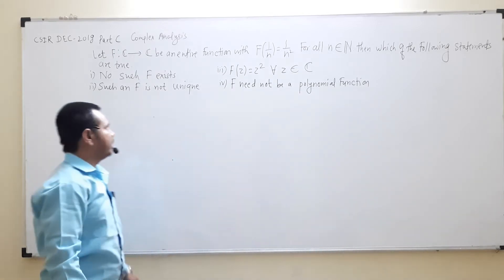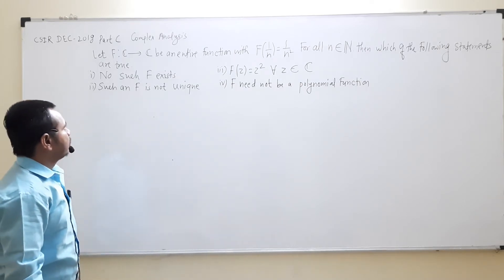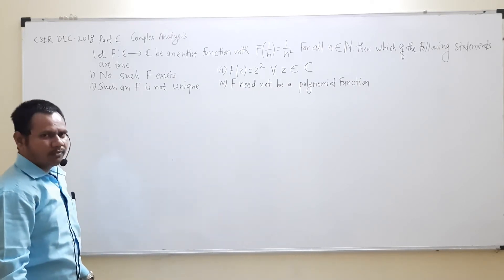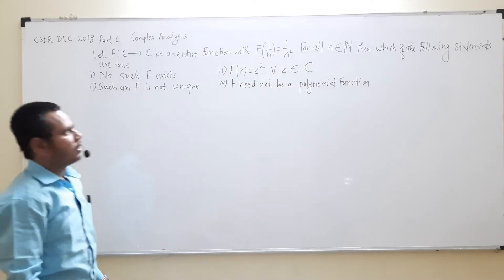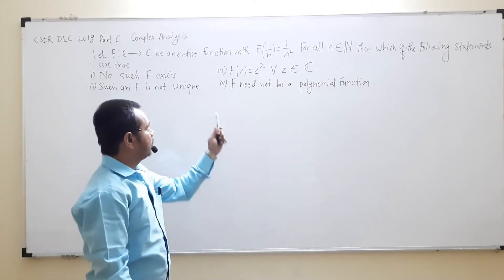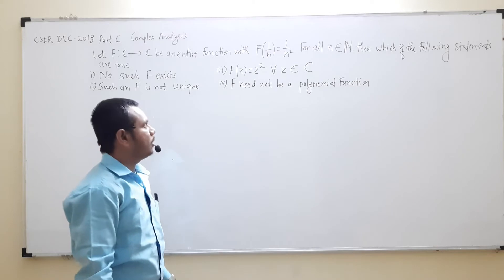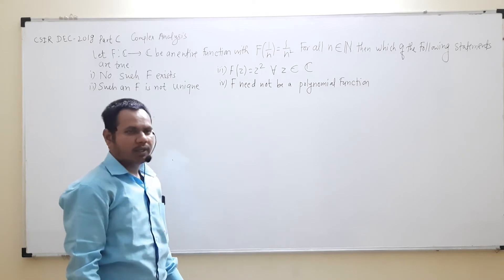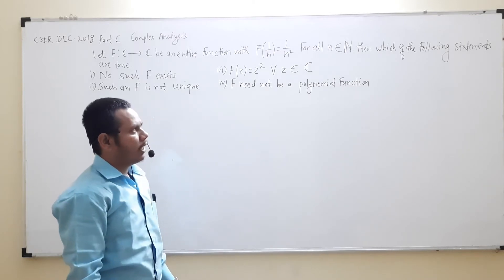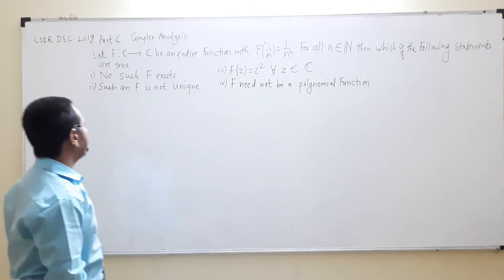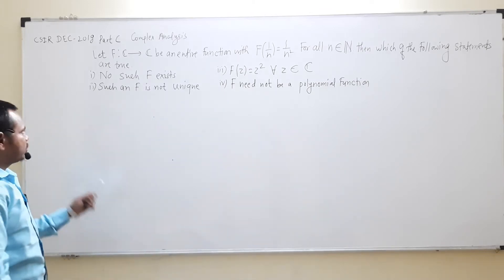Look at here. The problem is: Let f be an entire function from C to C, and given that f(1/n) maps to 1/n² for all n belongs to N, then which of the following statements are true?